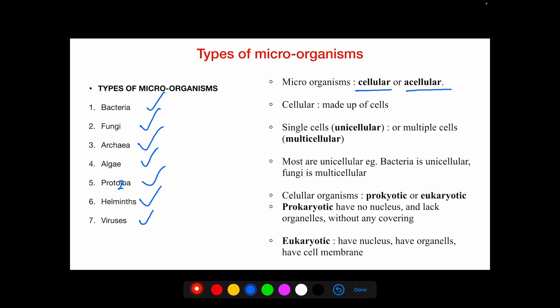Cellular microorganisms may be unicellular — having only one cell — or multicellular, with multiple cells. Most microorganisms are unicellular; for example, bacteria are unicellular while fungi are multicellular. Cellular organisms may also be prokaryotic or eukaryotic. Prokaryotic cells lack a true nucleus and membrane-bound organelles, while eukaryotic cells have a true nucleus, membrane-bound organelles, and a true cell membrane or cell wall.